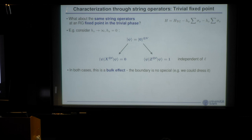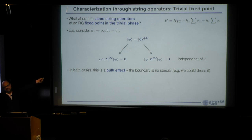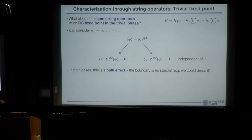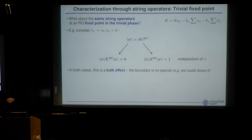Now let's look at the same quantities in the trivial phase. In the limit of an infinite Z field, we have an all-zero product state. A Z string operator here has expectation value one, independent of the string length — a very different behavior from the topological phase. If we instead put a diagonal field combining X and Z, both string types will decay exponentially with some exponent lambda to the power L. Crucially, this is a bulk effect: every spin contributes equally, not special at the boundary.